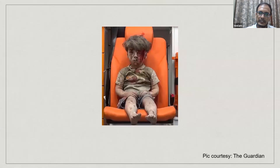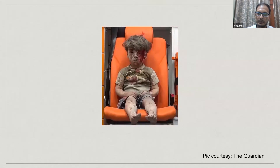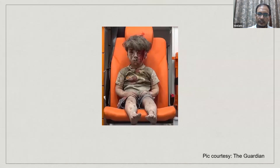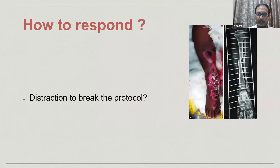We remember this picture from The Guardian, published 4-5 years ago. Here we can see a child who is probably a polytrauma case from a Syrian bomb blast — completely shocked and confused. Such a scenario is common in a pediatric emergency and we have to deal with it differently compared to adult emergency. What makes a child different from an adult is what we will discuss in this talk.